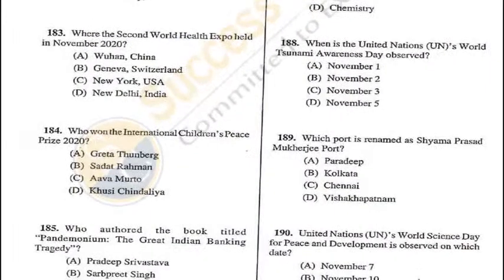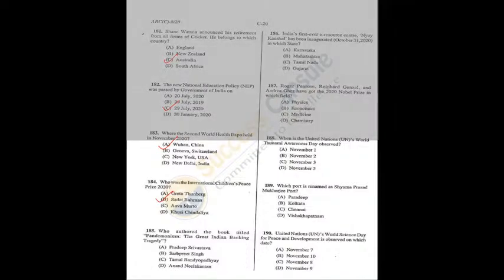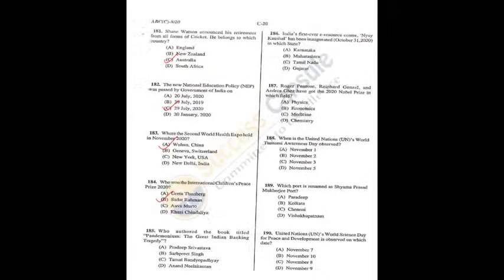Question 183: The second World Health Expo was held in November 2020 in Wuhan, China — a surprising answer. Question 184: Who won the International Children's Peace Prize? Sadaat Rahman from Bangladesh — B is the correct answer. Question 185: Who authored the book 'Pandemonium: The Great Indian Banking Tragedy'? Tamal Bandyopadhyay — C is the correct answer.